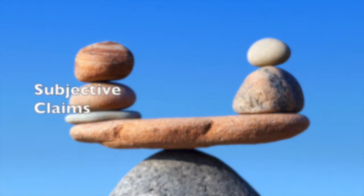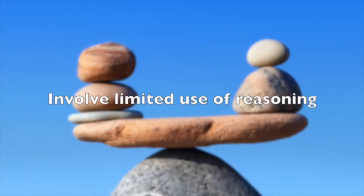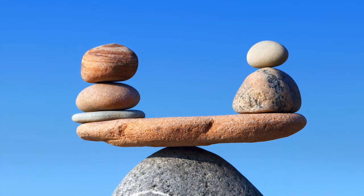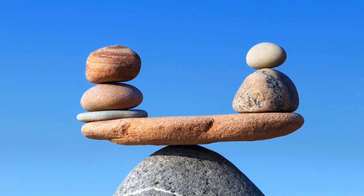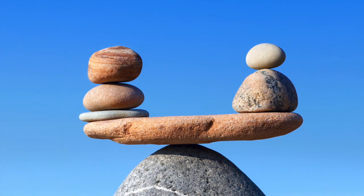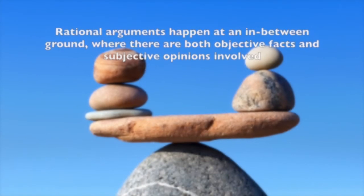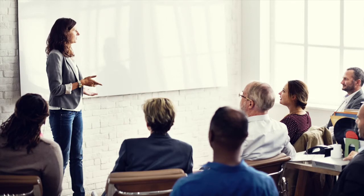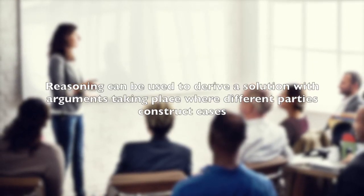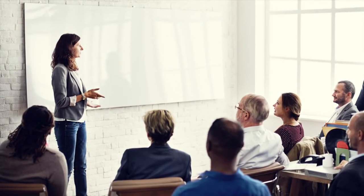Arguments based on purely subjective claims or purely objective facts involve limited use of reasoning. Facts can often be checked and shown decisively correct or incorrect, while with questions of subjective opinion there are no objective reasons and subjective reasoning is of little use. Rational arguments happen at an in-between ground where both objective facts and subjective opinions are involved, creating both certainty and uncertainty for a more complex dynamic. In such a case, reasoning can be used to derive a solution, with arguments taking place where different parties construct cases for their claims based upon reasons.